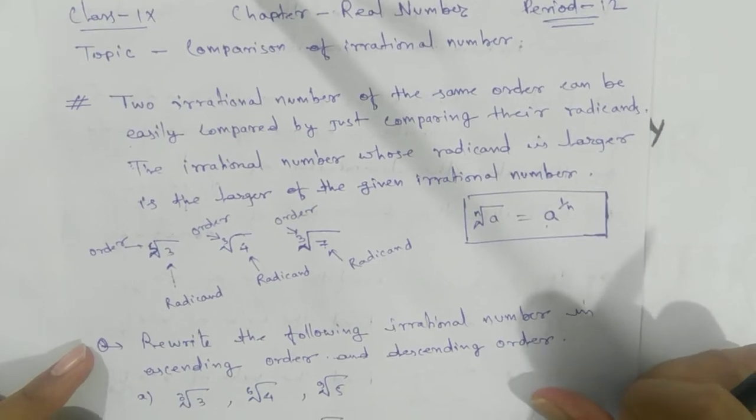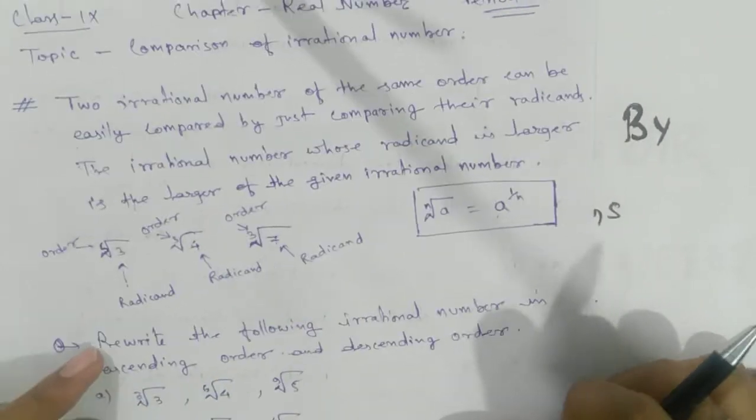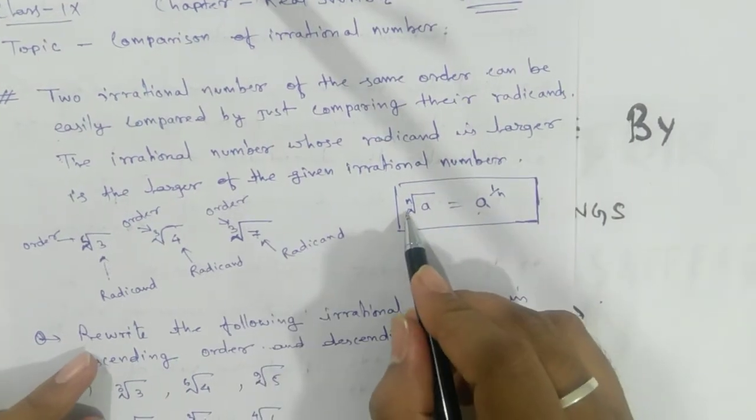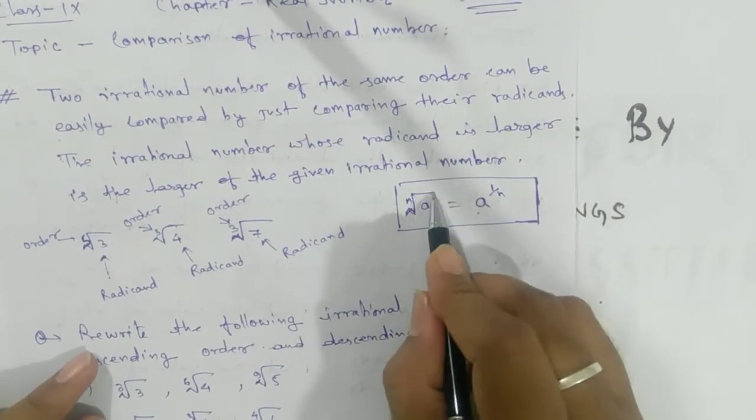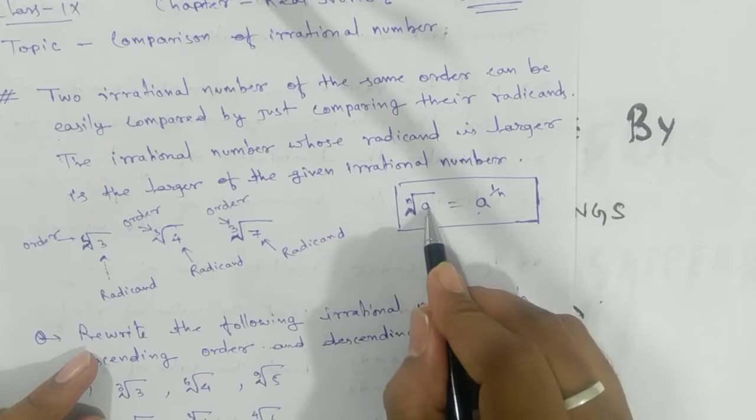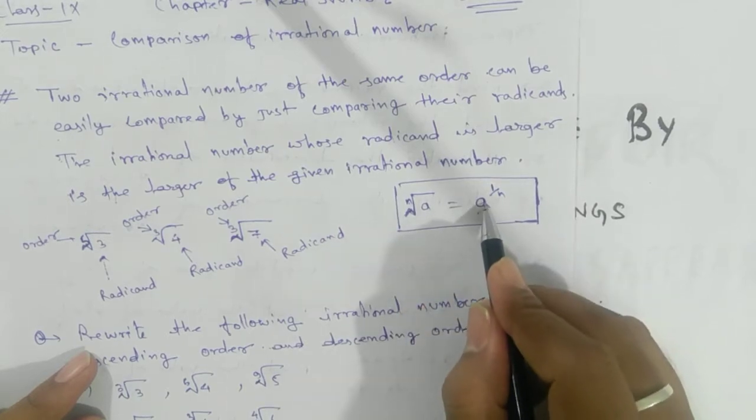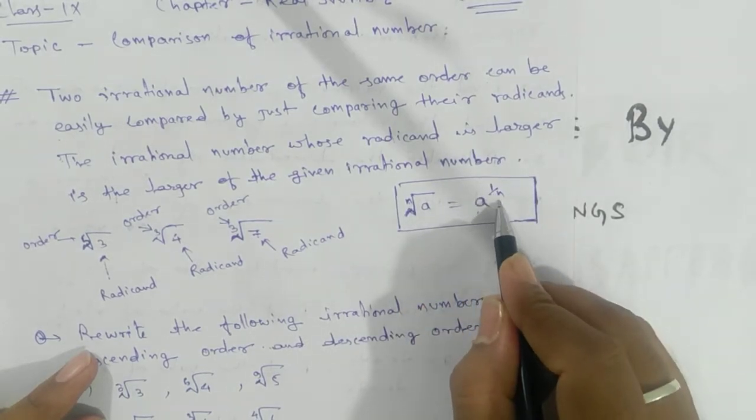Before comparison, we need to see this form. We read this as nth root of a, and this can be written as a to the power 1 by n.